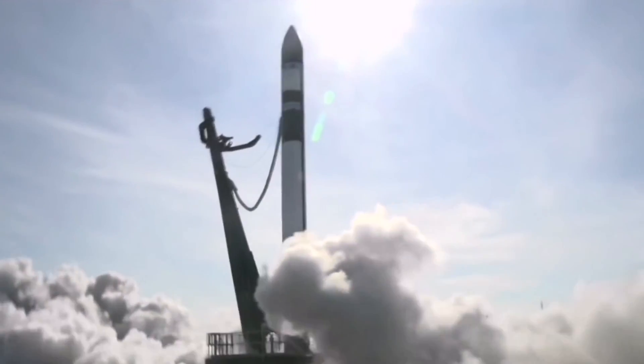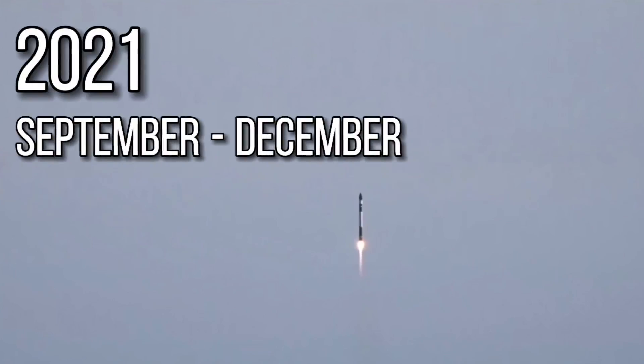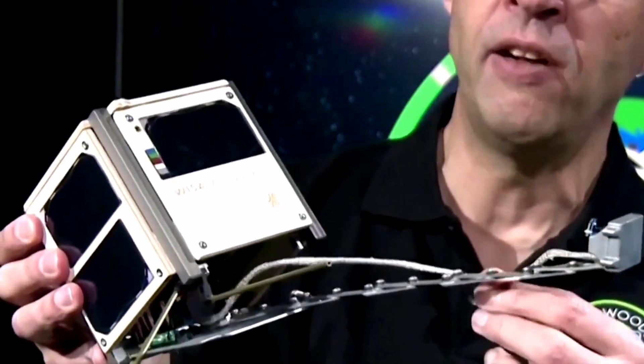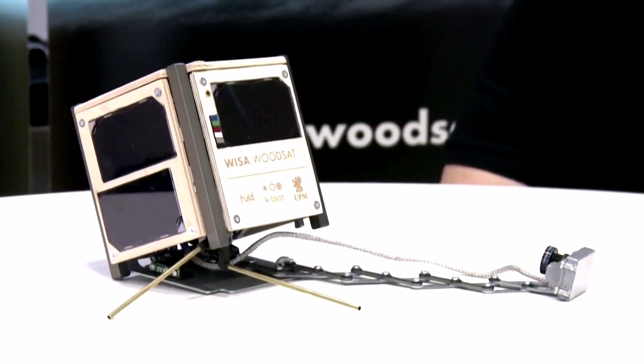If everything goes well, WoodSat launch will take place by the end of 2021, and then a couple of sensors and two cameras will be used to see how the orbiter performs in outer space.